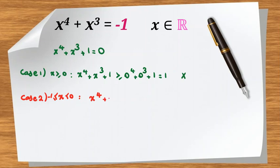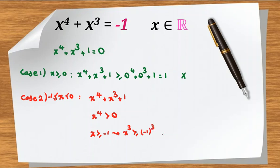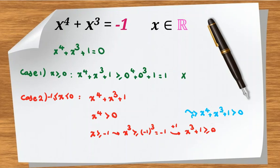Consider x to the 4 plus x cubed plus 1 in two parts. x to the 4 is positive. Since x is greater than or equal to negative 1, raising both sides to the odd power 3 gives x cubed greater than or equal to negative 1, so x cubed plus 1 is greater than or equal to 0. Combining these two parts: x to the 4 is strictly greater than 0, and x cubed plus 1 is greater than or equal to 0, so the sum is strictly greater than 0. Again in Case 2 we have no answer.